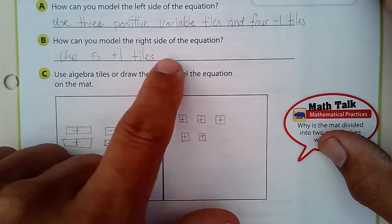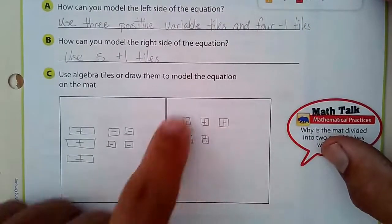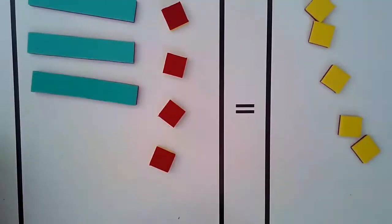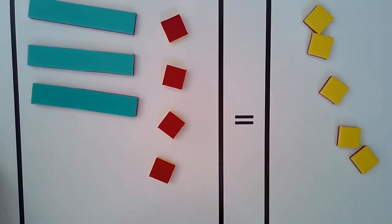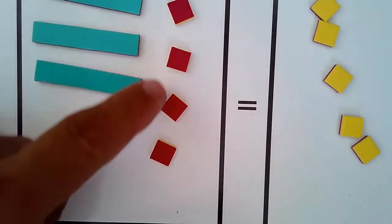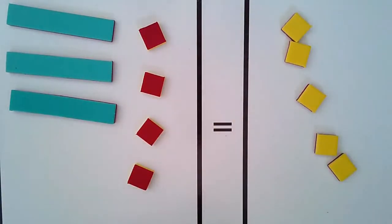How can you model the right side of the equation? It's just five, five positive ones, so there you go. And I have an equation mat here, and in the equation mat, we have 3x minus 4 equals 5.